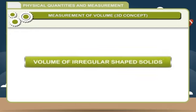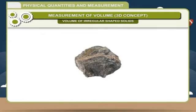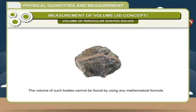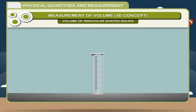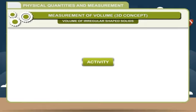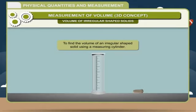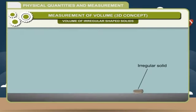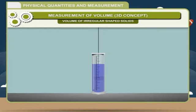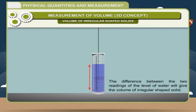Volume of irregular shaped solids: Bodies which have no regular shape are known as irregular shaped bodies. The volume of such bodies cannot be found by using any mathematical formula. For this, we use measuring cylinders. This method of volume measurement is known as the displacement method, discovered by Archimedes. To find the volume, immerse the irregular shaped solid completely in a measuring cylinder filled with water. Note the reading before and after immersing the solid. The difference between the two water level readings gives the volume of the irregular shaped solid.